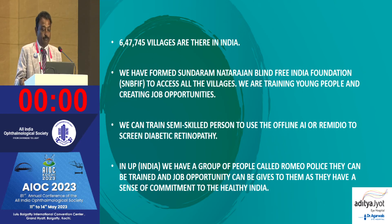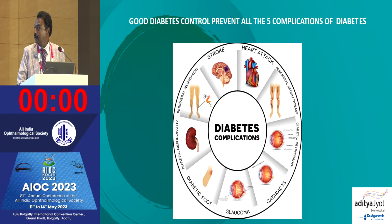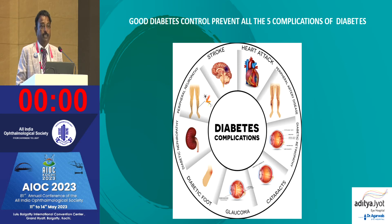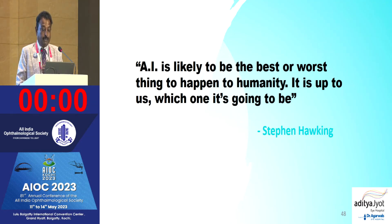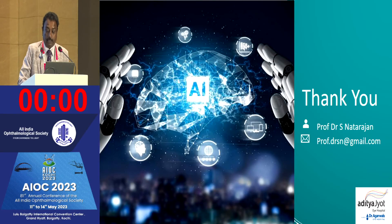My idea is to diagnose diabetes early, at age 35, to prevent renal failure or heart attacks and reduce costs. As Dr. Arun Shethrapal quoted Stephen Hawking: AI is likely to be the best or worst thing to happen to humanity — it is up to us which one it's going to be. Our message is: world, will you forgive yourself if someone goes blind from diabetes? Diabetic blindness is preventable — if you are diabetic, get a retina checkup to prevent vision loss.